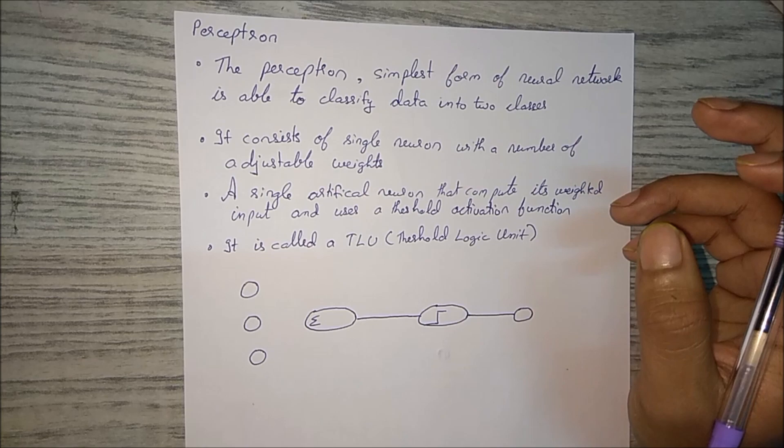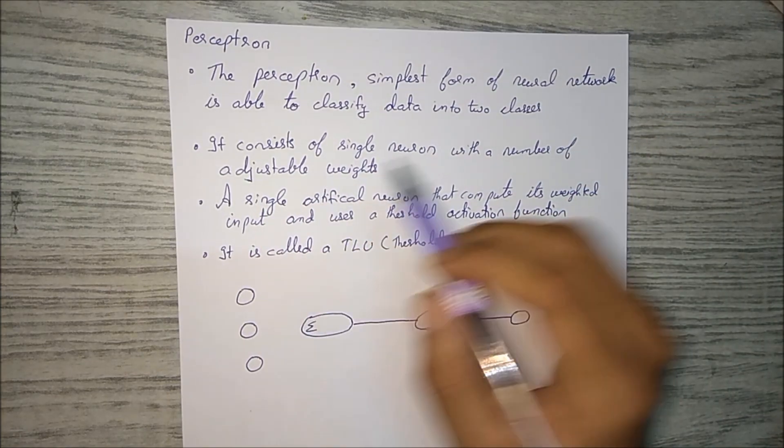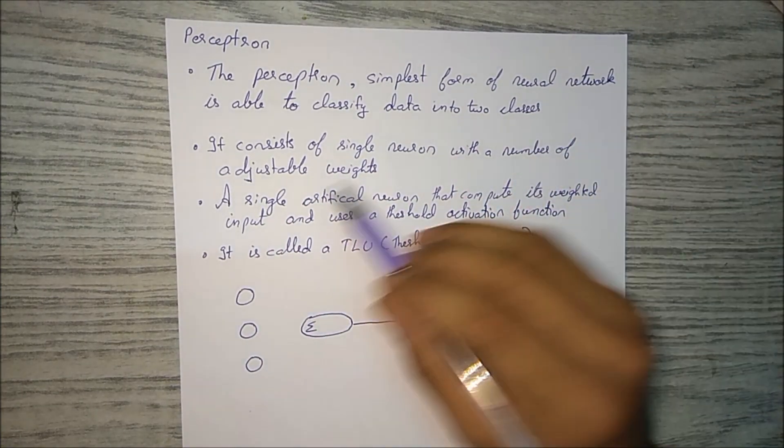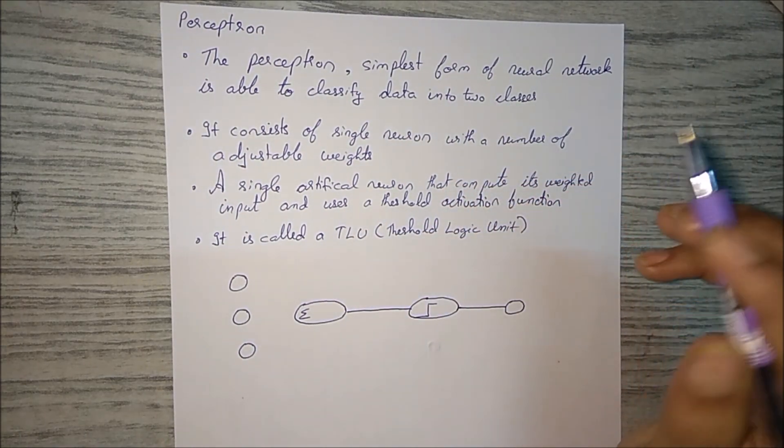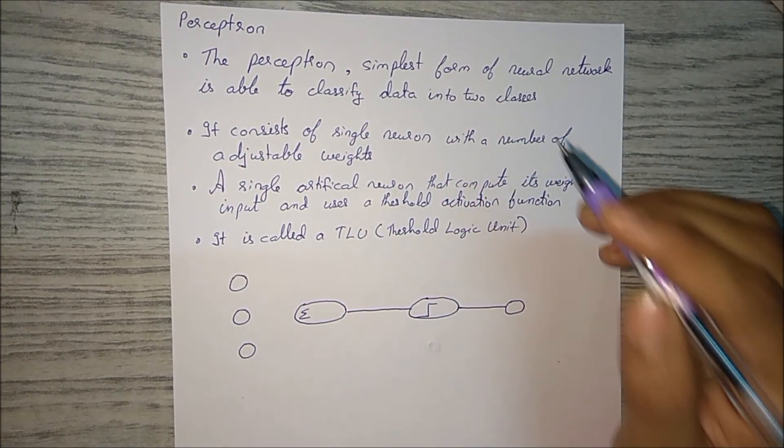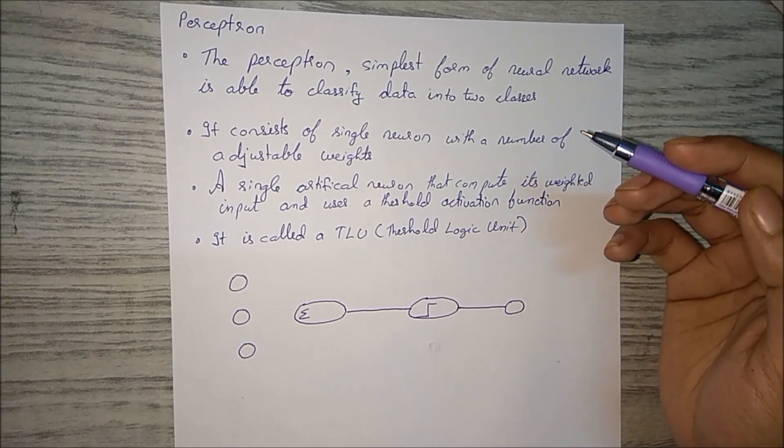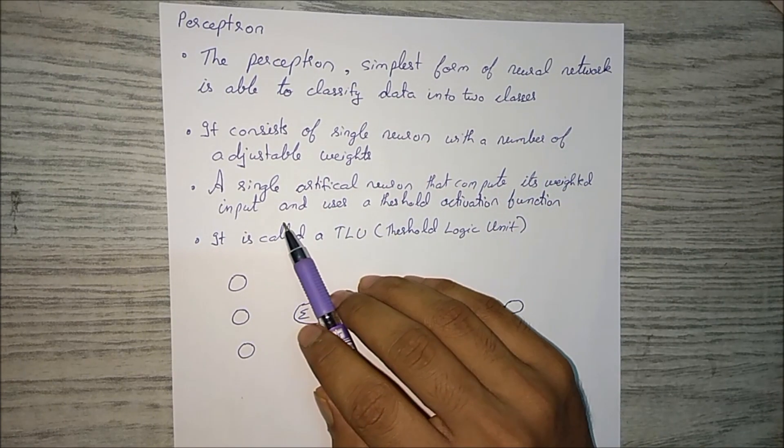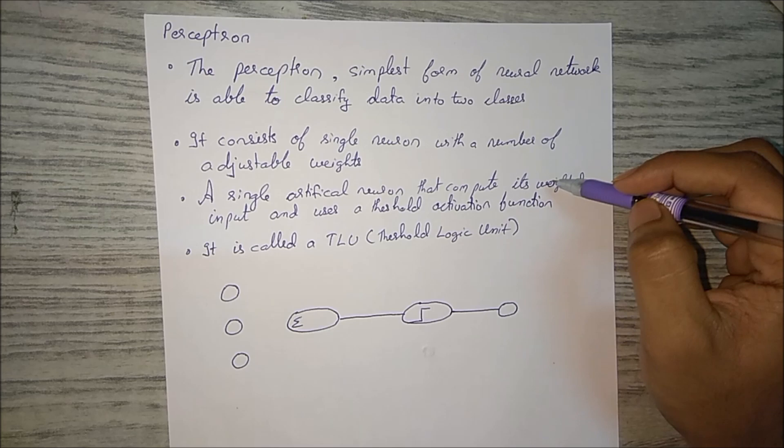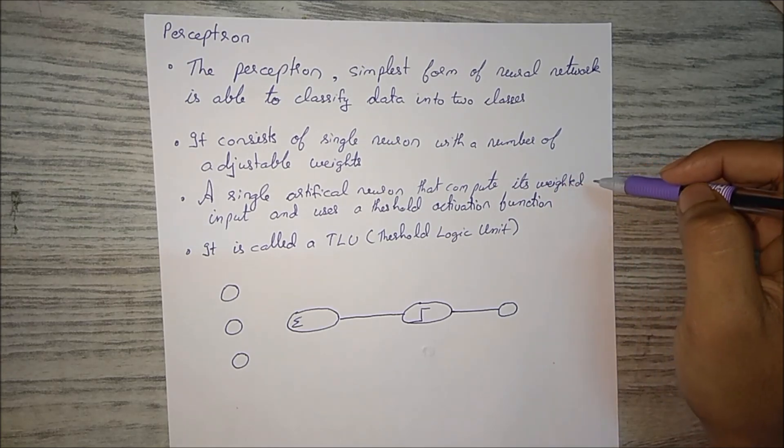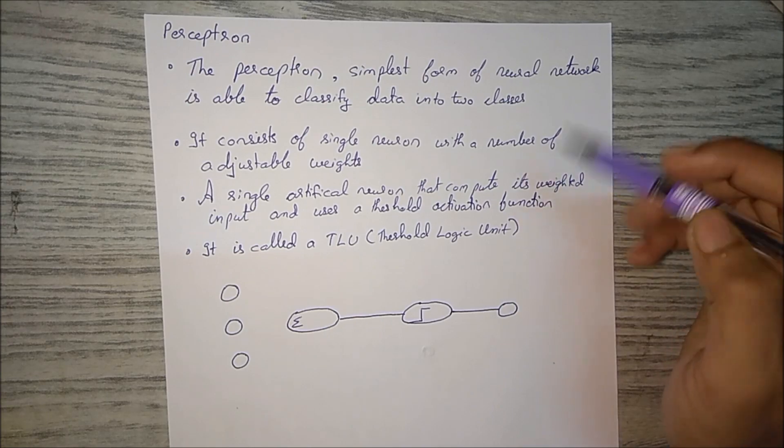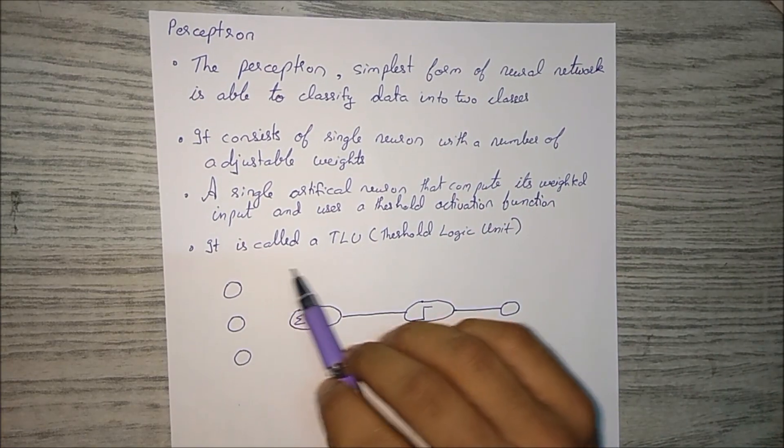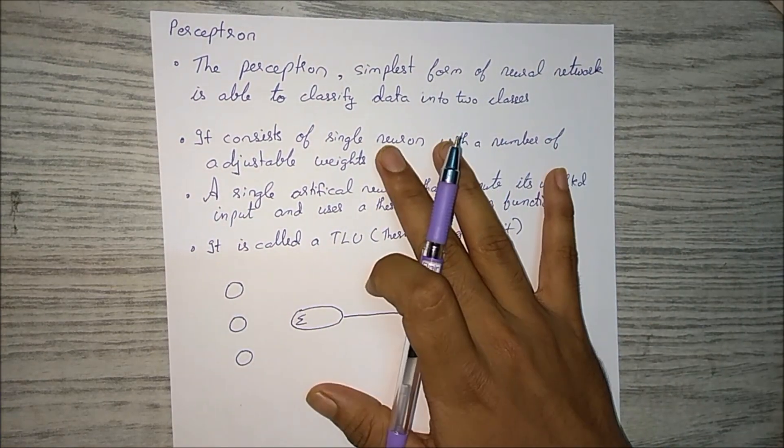It consists of a single neuron with a number of adjustable weights. So what it contains is a neuron which has a weight attached to it. A single artificial neuron that can compute its weighted input and use the threshold activation function, and this is also called TLU.